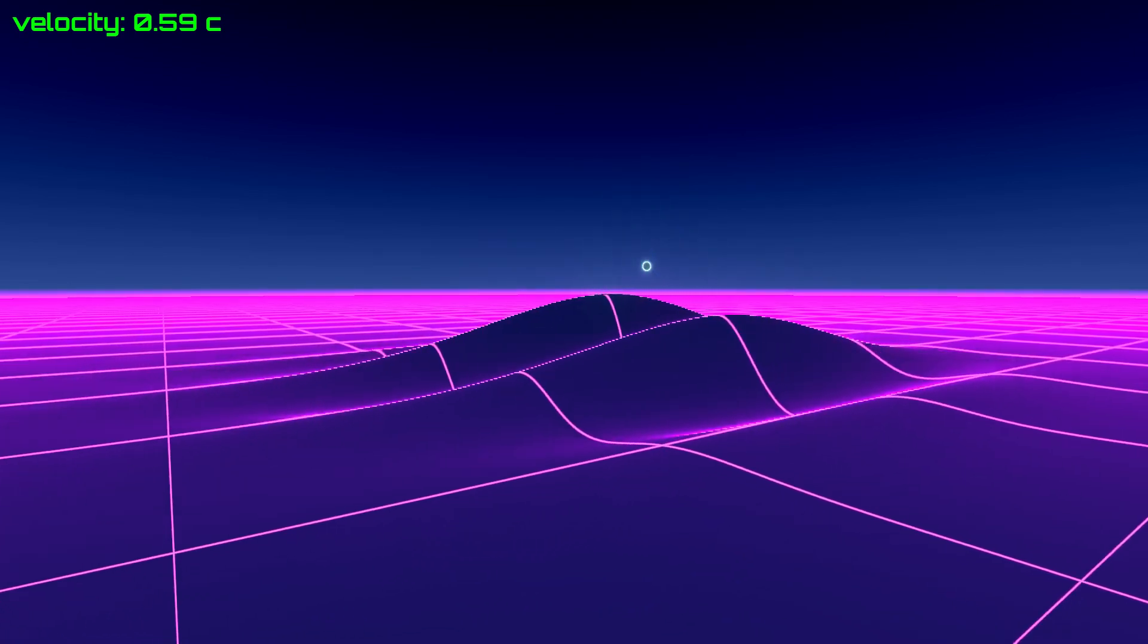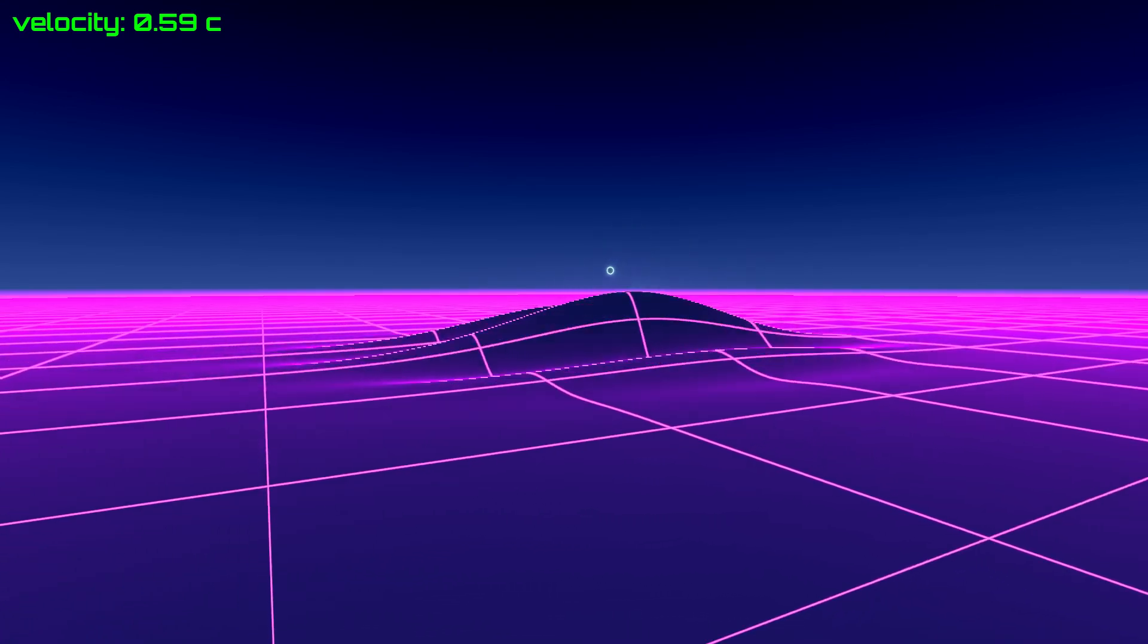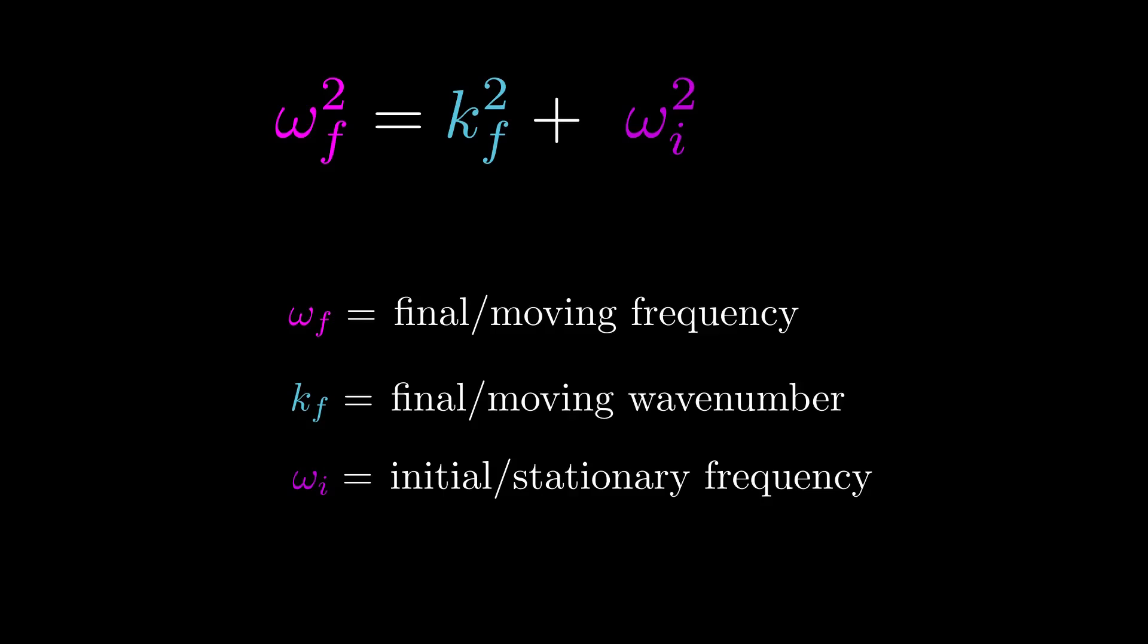And two, frequency and the wavenumber of the moving packet is related to the frequency of the stationary wave with the same formula as energy and momentum is related to mass in special relativity. This then suggests that we actually can, in fact, make de Broglie's famous interpretation.